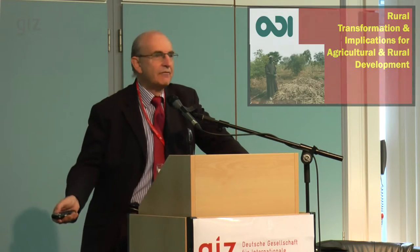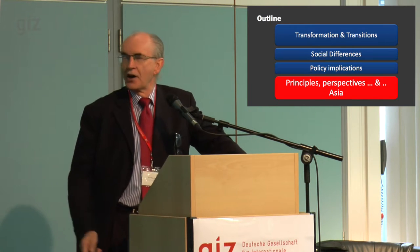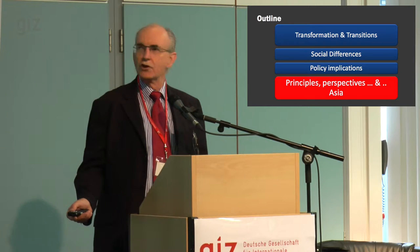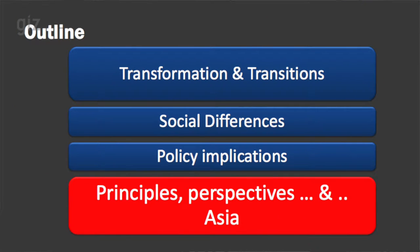I was given this exam question of being asked about rural transformation. So what am I going to try to cover? I'm going to talk about transformations and transitions, social differences, and the policy agenda implied by this. Throughout, I'll be talking about principles which will look fairly basic — please bear with me — and then moving from those principles to some of the variations that we see.